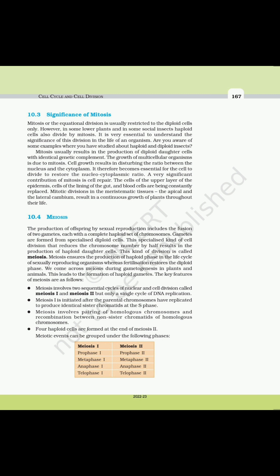The key features of meiosis are: meiosis involves two sequential cycles of nuclear and cell division called meiosis I and meiosis II, but only a single cycle of DNA replication; meiosis I is initiated after the parental chromosomes have replicated to produce identical sister chromatids at the S phase; meiosis involves pairing of homologous chromosomes and recombination between non-sister chromatids of homologous chromosomes; four haploid cells are formed at the end of meiosis II.